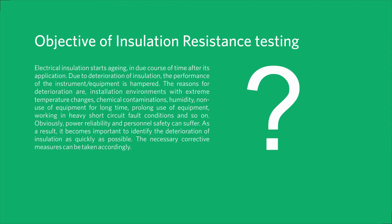Objective of insulation resistance testing: Electrical insulation starts aging in due course of time after its application. Due to deterioration of insulation, the performance of the instrument or equipment is hampered. The reasons for deterioration are installation environments with extreme temperature changes, chemical contaminations, humidity, non-use of equipment for long time, prolonged use of equipment, and working in heavy short circuit fault conditions. Power reliability and personnel safety can suffer, so it becomes important to identify the deterioration of insulation as quickly as possible, and the necessary corrective measures can be taken accordingly.